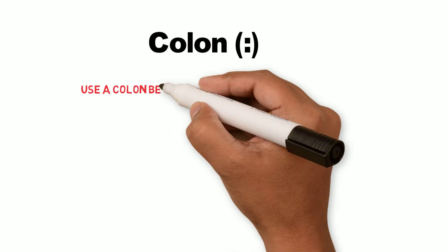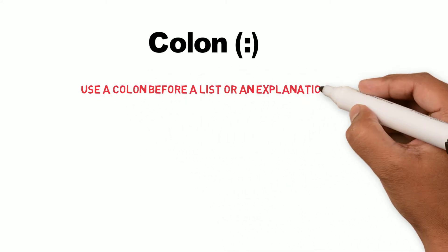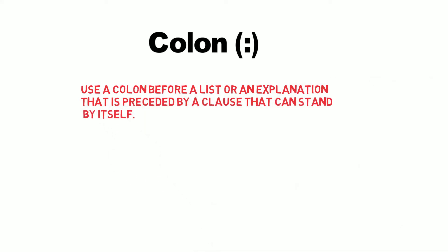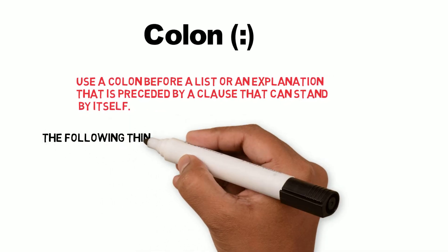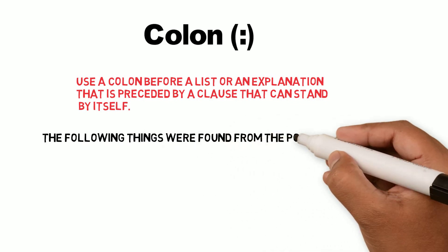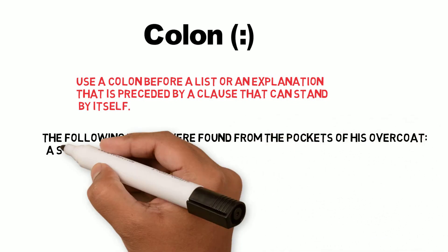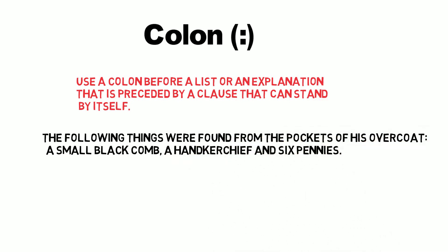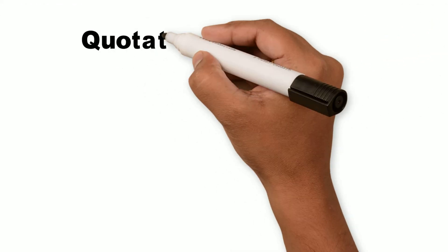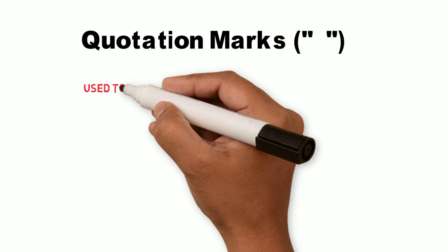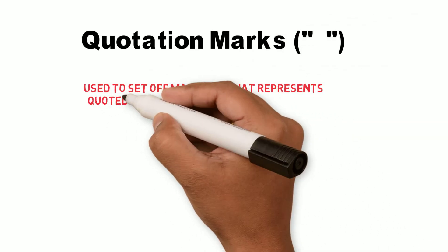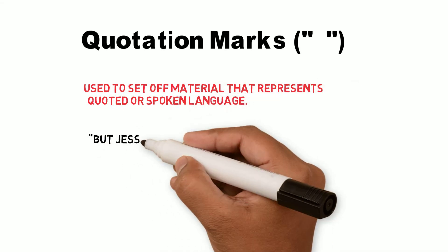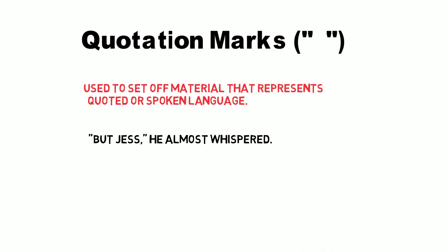Use a colon before a list or an explanation that is preceded by a clause that can stand by itself. For example, the following things were found from the pockets of his overcoat: a small comb, a handkerchief, and six pennies. Quotation marks are used to set off material that represents quoted or spoken language. For example, but yes, he almost whispered.